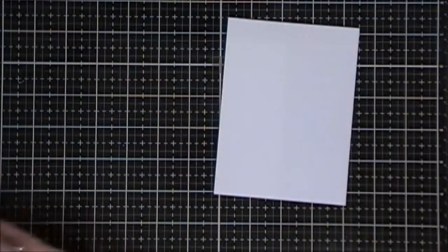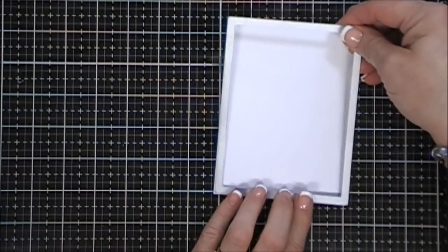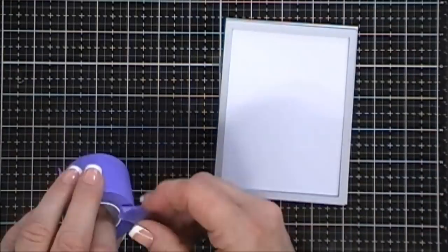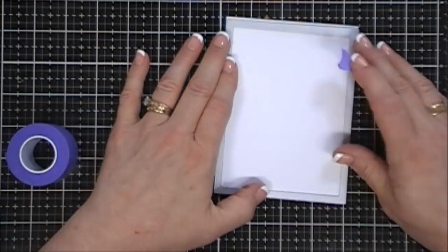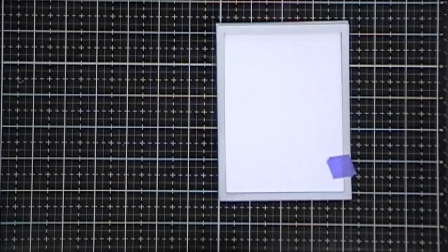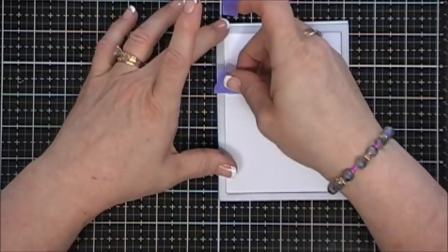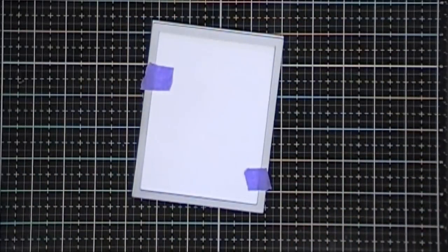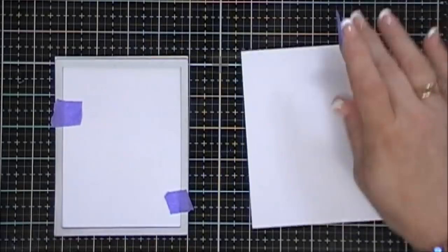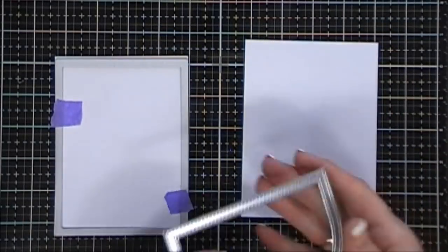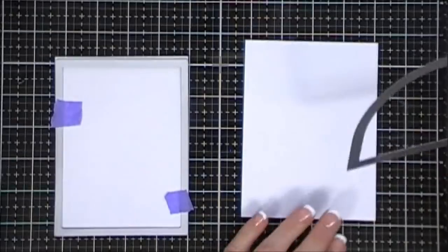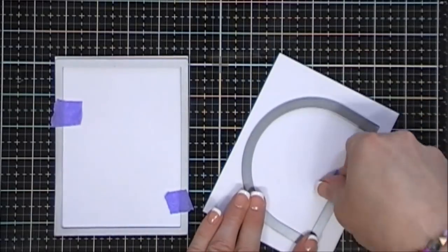For my background, I'm taking a stitched rectangle die. This will cut out a panel that's four inches by five and a quarter. Then I wanted to add a little bit more, so I grabbed a stitched dome die that I had from my stash and, using white cardstock, I'm going to cut out a dome frame.